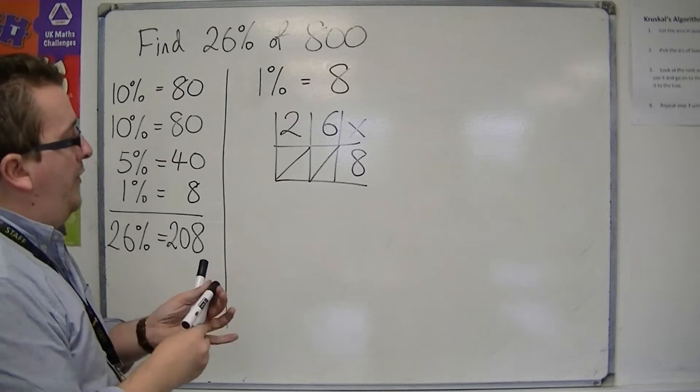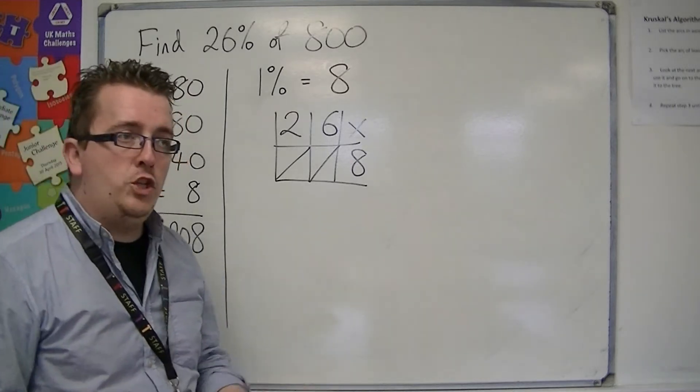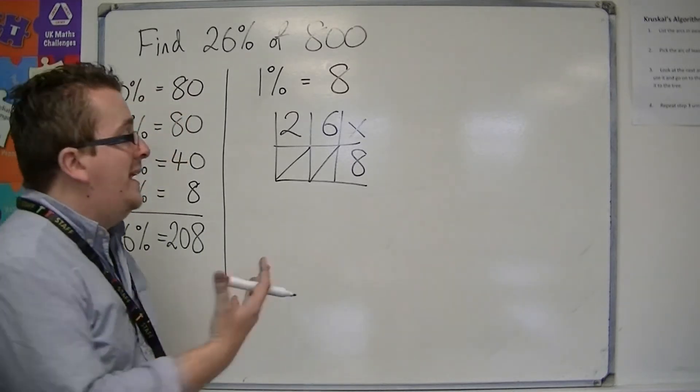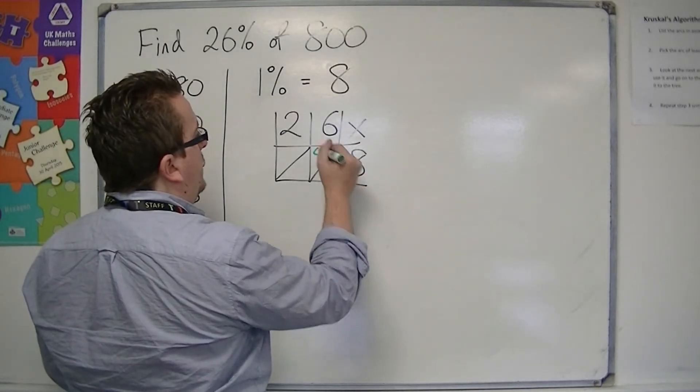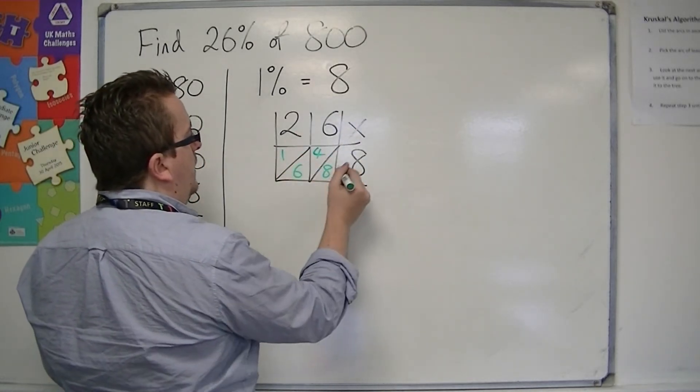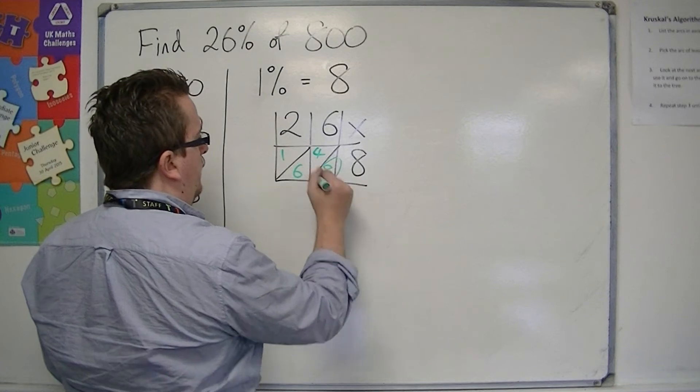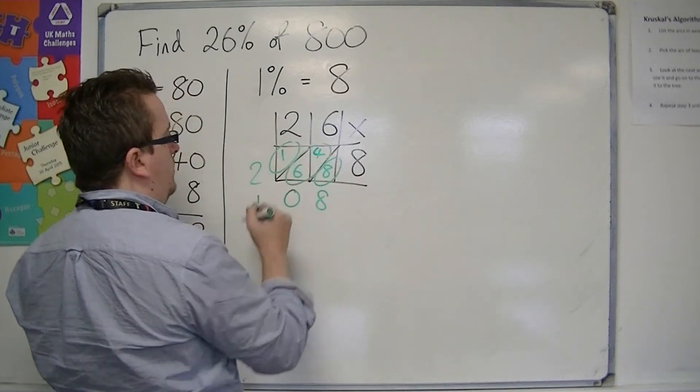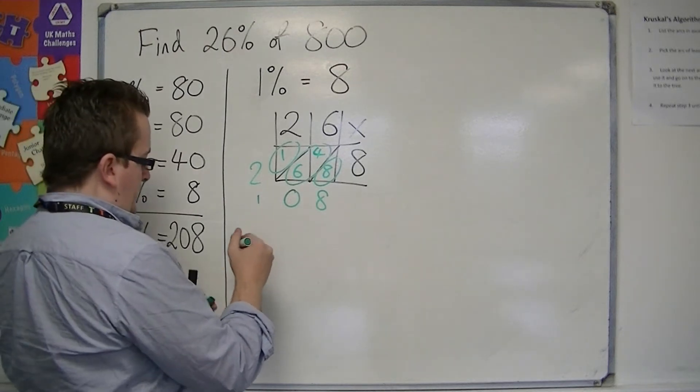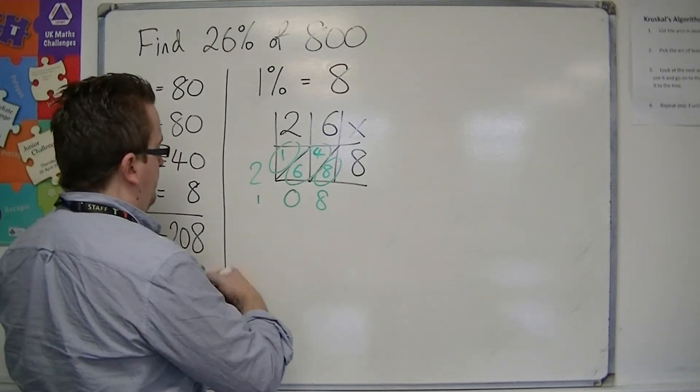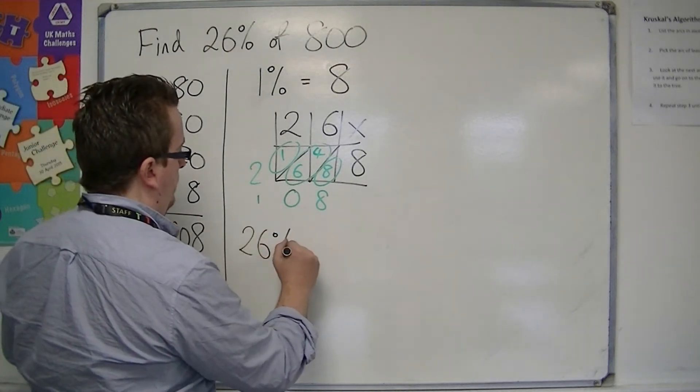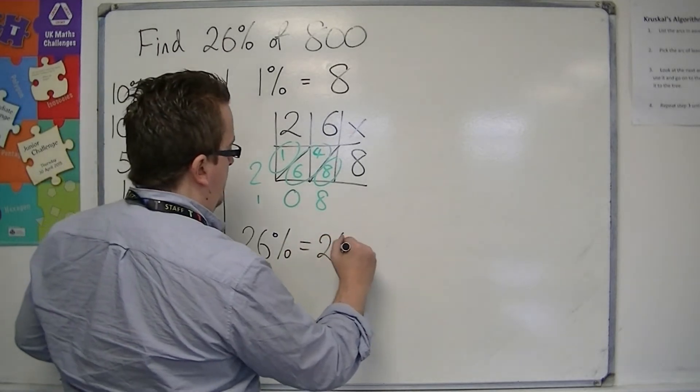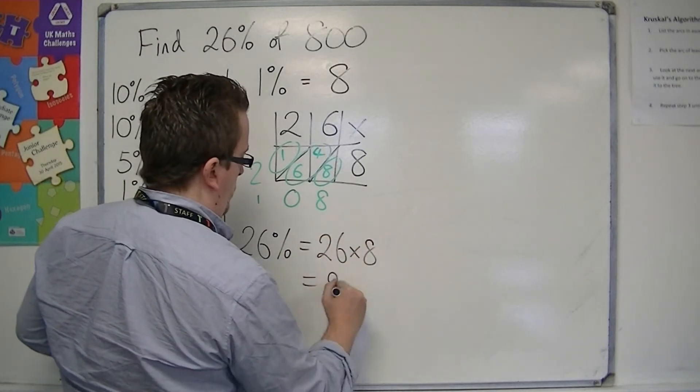We use our long multiplication or grid method or lattice method. 6 8s is 48, 2 8s is 16. So we get the 8, 10, and the 1 is 2. So 208. So 26% is 26 times 8, which is 208.